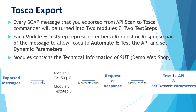The procedure we follow will be the same as for REST services. Every SOAP message that you export from API scan to Tosca commander will be turned into two modules and two test steps. Each module and test step represents either the request or response part of the SOAP message, allowing Tosca to automate and test the API and set dynamic parameters. Modules contain the technical information of the system under test.